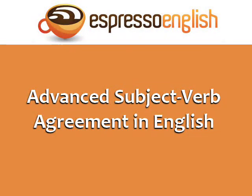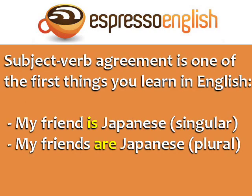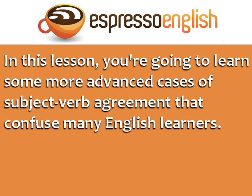Advanced Subject-Verb Agreement in English from EspressoEnglish.net. Subject-verb agreement is one of the first things you learn in English. For example, 'my friend is Japanese' — we use 'is' because 'friend' is singular. 'My friends are Japanese' — we use 'are' because 'friends' is plural. In this lesson, you're going to learn some more advanced cases of subject-verb agreement that confuse many English learners.